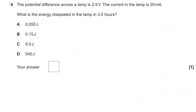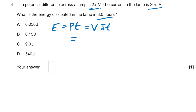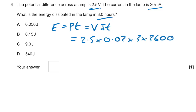Question fourteen: PD across a lamp is 2.5 volts, current is 20 mA, find energy dissipated in 3 hours. Energy = VIt = 2.5 × 0.02 × 3 × 3600 = 540 joules. The answer is D.